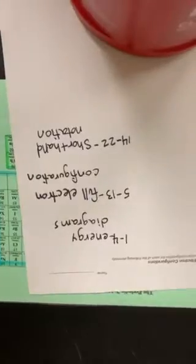So first of all, on the worksheet, 1 through 4 are going to be energy diagrams, 5 through 13 are going to be full electron configurations, and 14 through 22 are going to be shorthand notation.